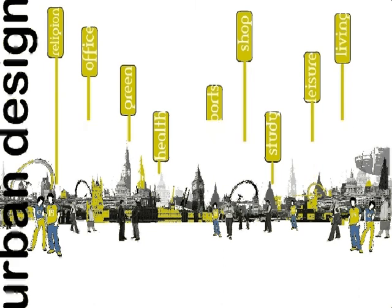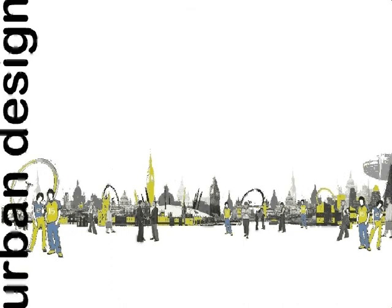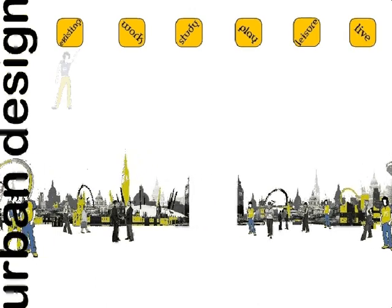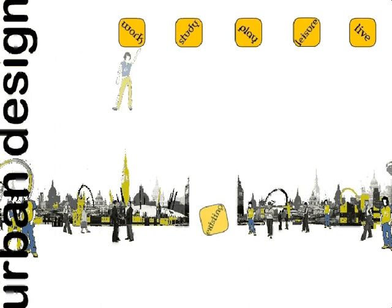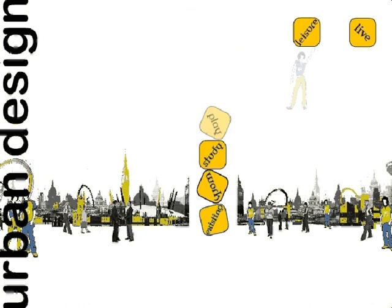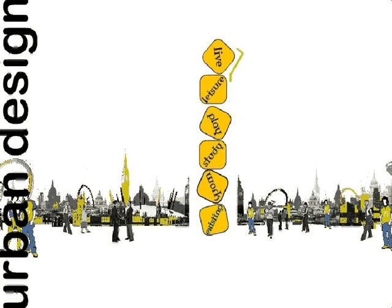We have identified existing uses on the site, which include some retail, housing and commercial space. The existing uses are insufficient for the needs of a diverse and predominantly low-income community. In order to transform this into a sustainable, vibrant community, we will incorporate the existing whilst adding new uses such as education facilities and health clinics, that will support the upward mobility of the community.